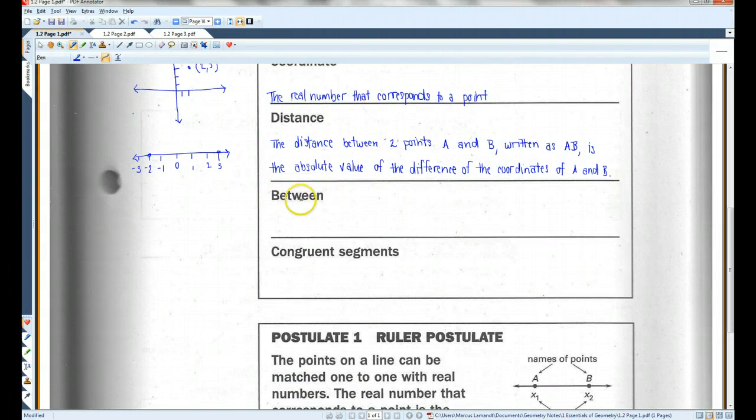Between. You guys kind of already have an idea of what between means. In geometry, when I say a point is between two other points, it means that those three points are collinear and that point is in the middle. I'll draw a picture.